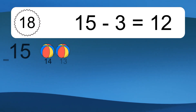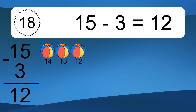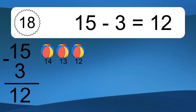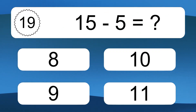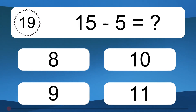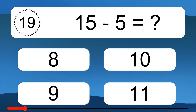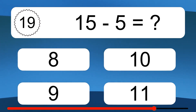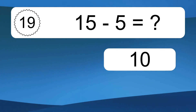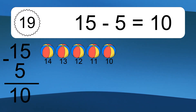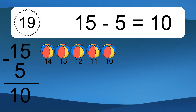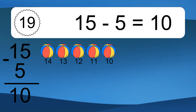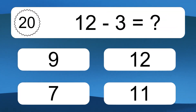18 minus 3 equals 15. Let's count it: 17, 16, 15. 15 minus 3 equals what? 15 minus 3 equals 12. Let's count it: 14, 13, 12. 15 minus 5 equals what?